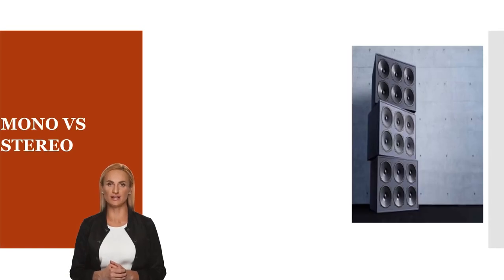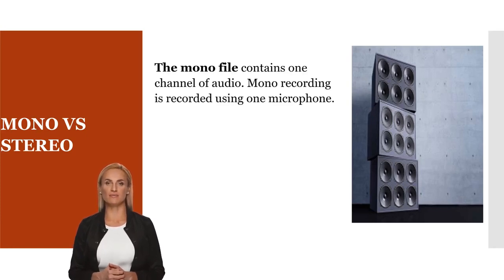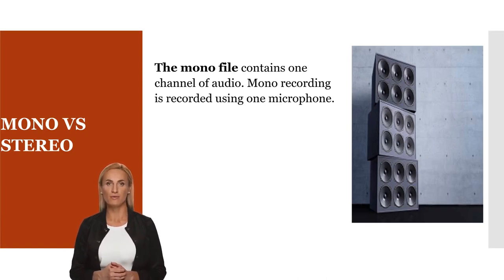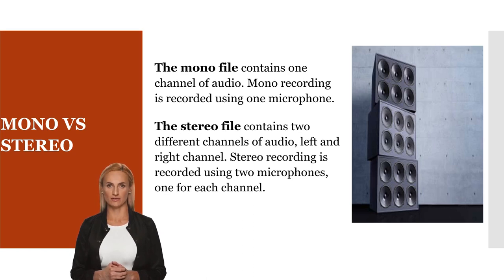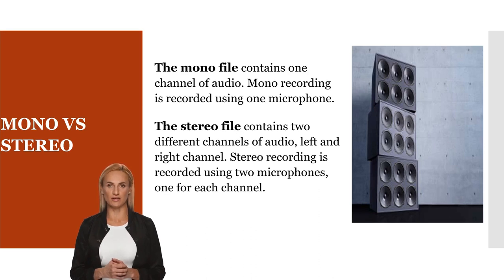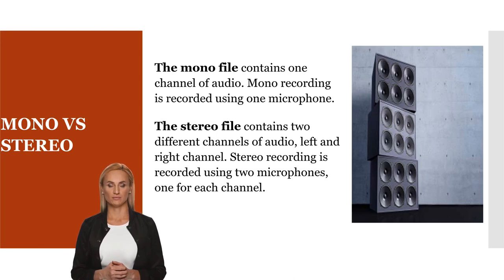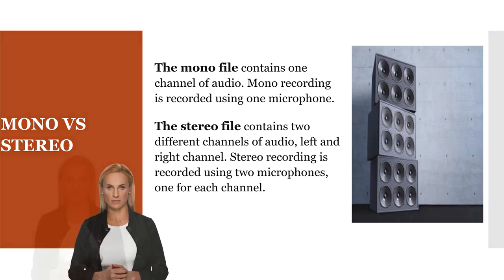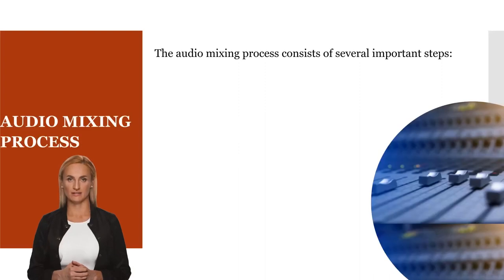There could be different audio channels in an audio track. A mono file contains one channel of audio and is recorded using one microphone. A stereo file contains two different channels of audio — the left and the right channel — recorded using two microphones, one for each channel. Stereo audio can create a more immersive listening experience since the audience perceives sound as coming from the space between the speakers rather than from one speaker alone.